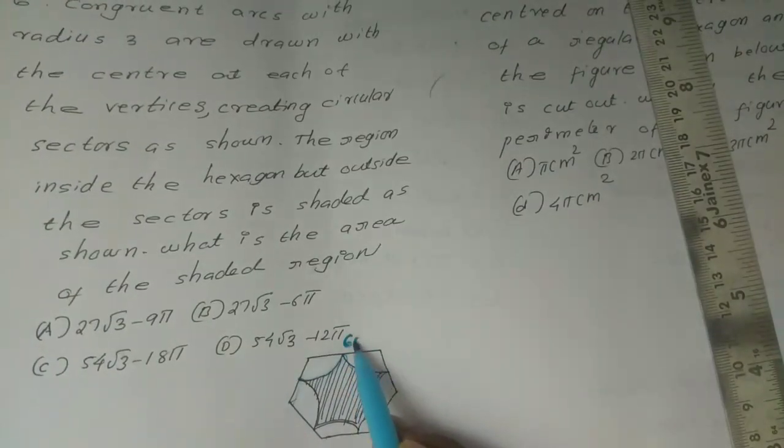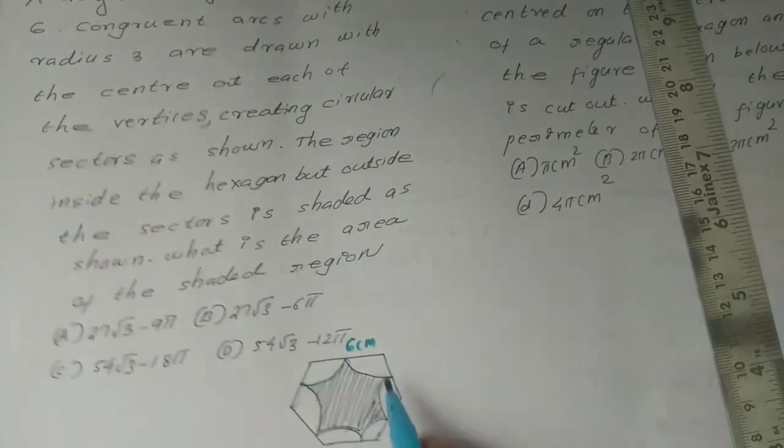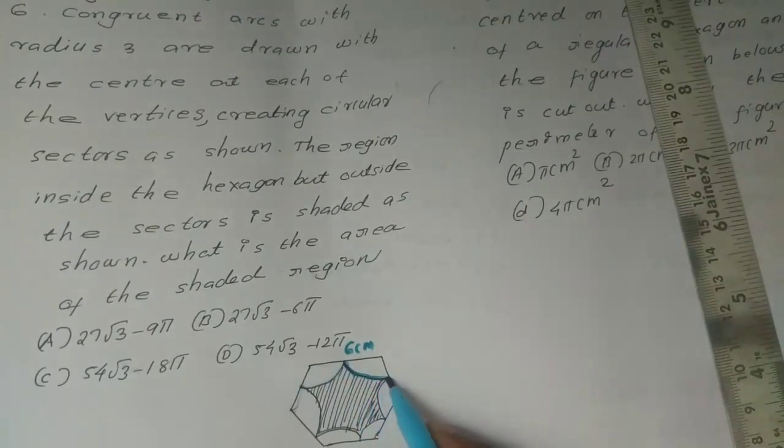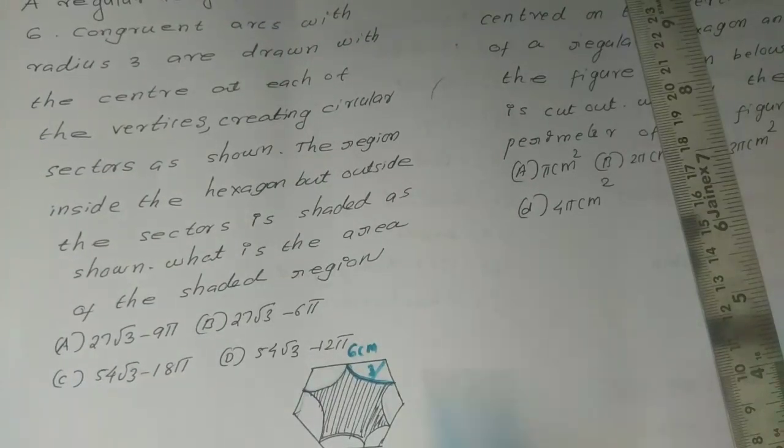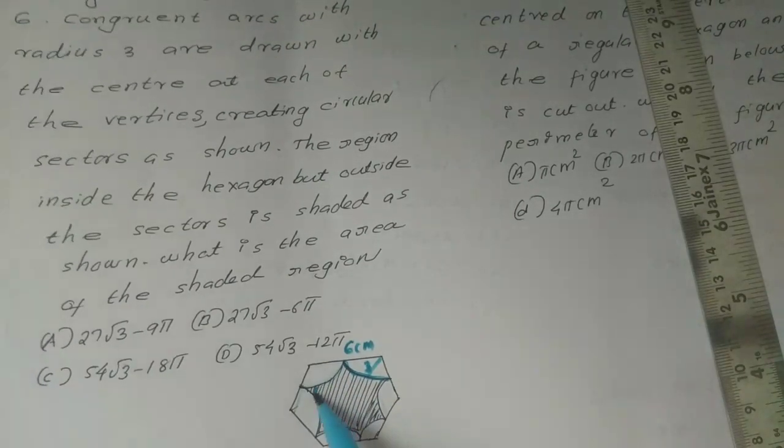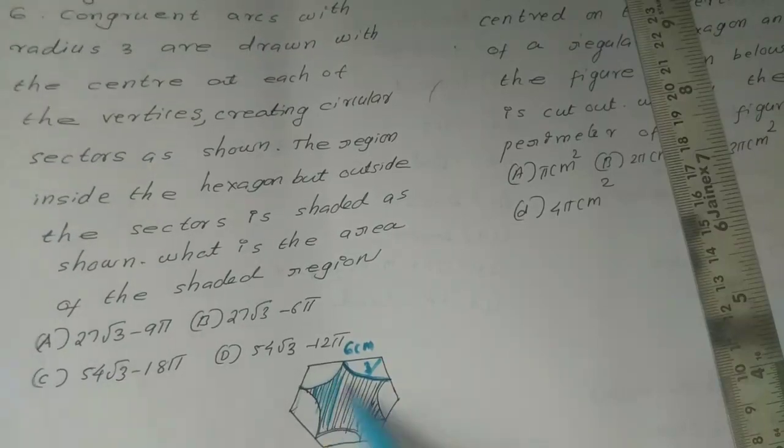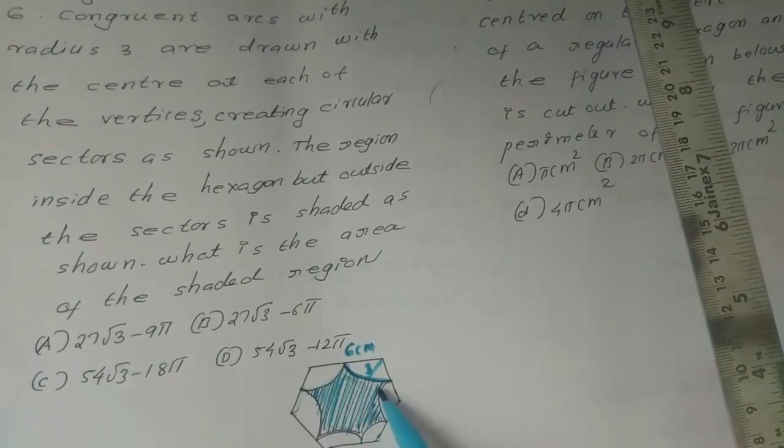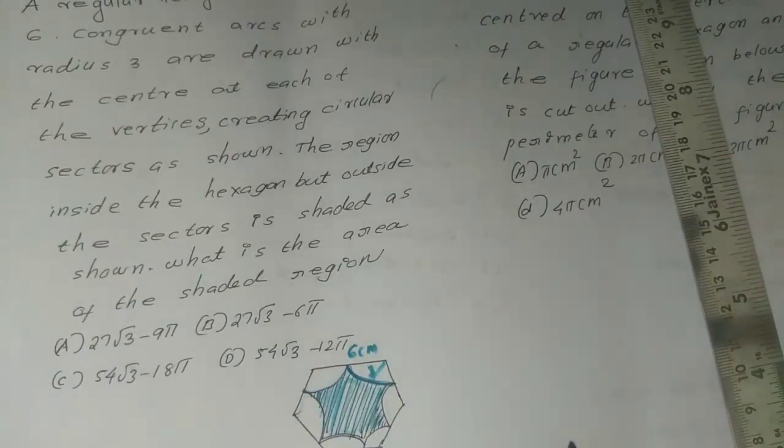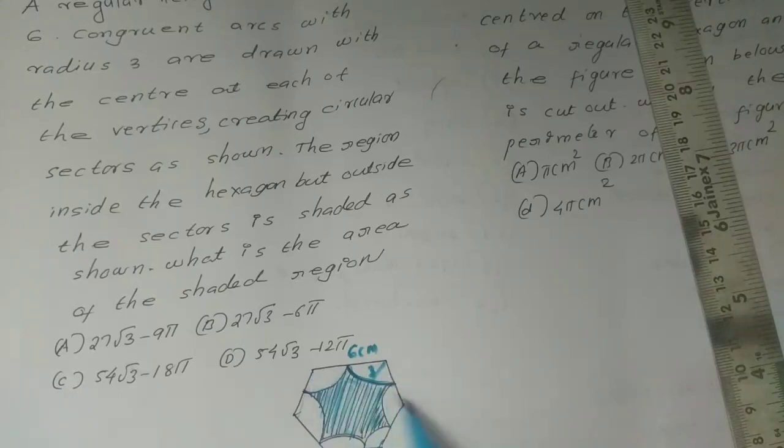This length is 6 cm. This radius is 3 cm. This is the center. This is the length of the shaded region. This area is the area of the shaded region.